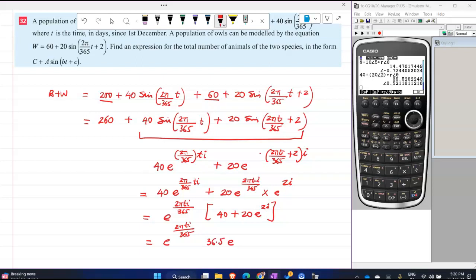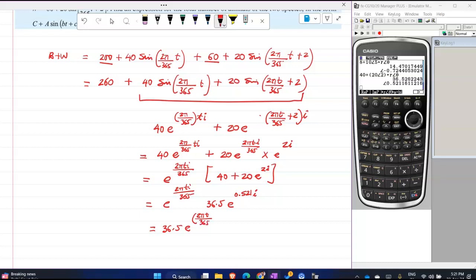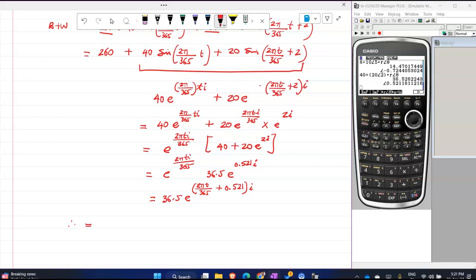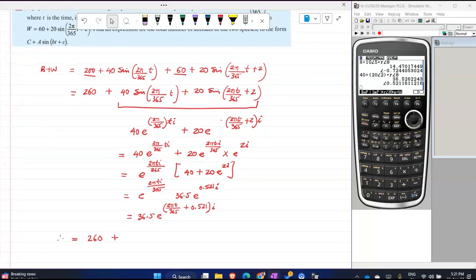E raised to 0.521i. So when you combine this, this is 36.5 e^(2πT/365 + 0.521i). Therefore this will become 260 plus, what's your amplitude? 36.5.